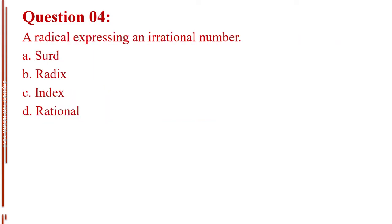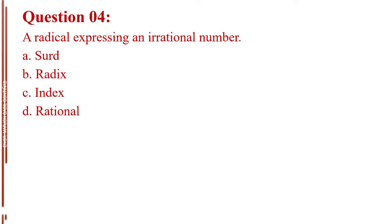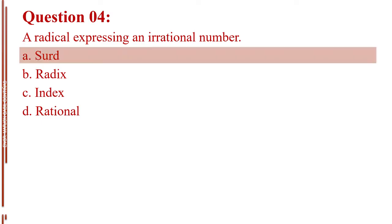Question number four. A radical expressing an irrational number. Letter A, surd. Letter B, radix. Letter C, index. Letter D, rational. The answer is Letter A, surd.